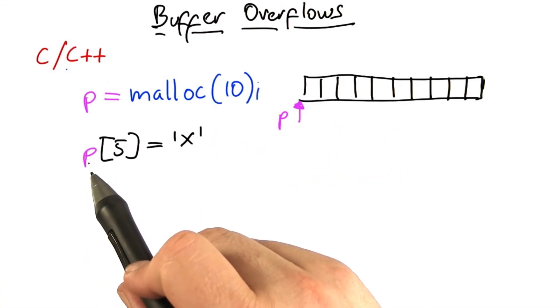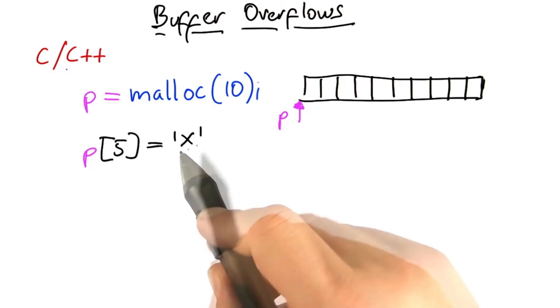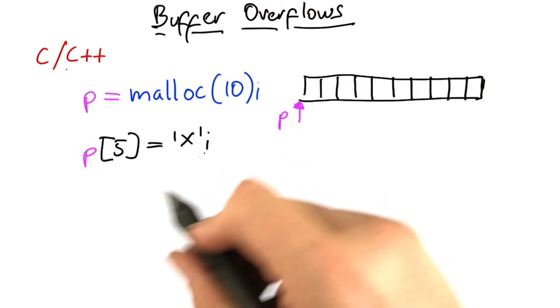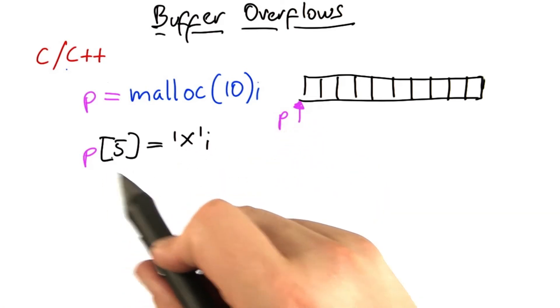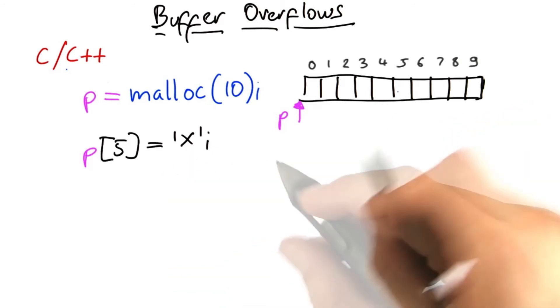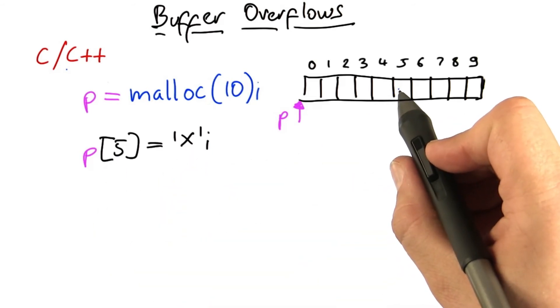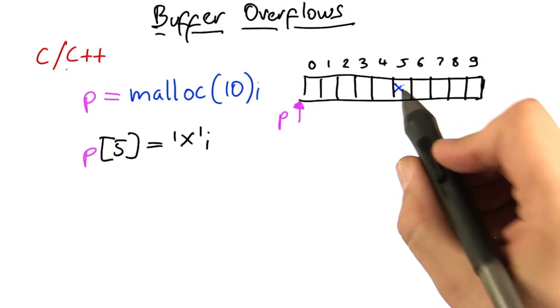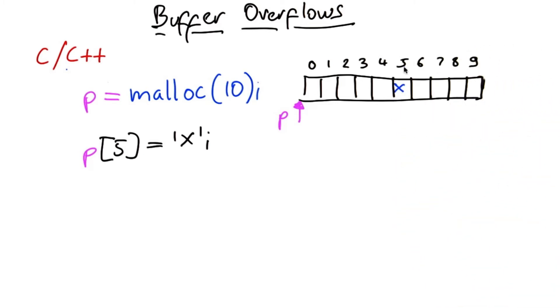What you actually have here is an array of 10 characters. You can write these characters one by one. For instance, in location number 5, let's store an x. In C, as in other languages, arrays start with an index of 0, so 5 is actually the 6th element in the array.